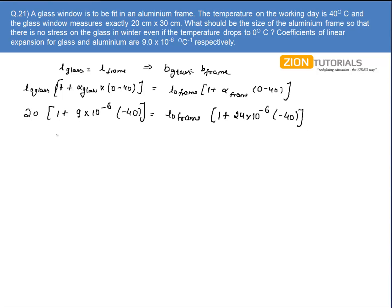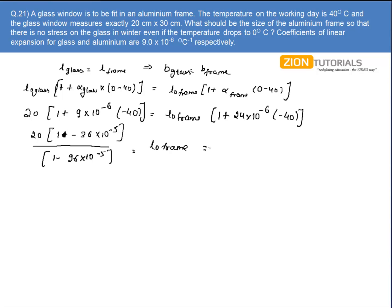Solving this equation, we get: 20 times (1 minus 36 × 10⁻⁵) divided by (1 minus 96 × 10⁻⁵). That gives the initial length of the aluminium frame. On solving, the value of the aluminium frame length is 20.012 cm.